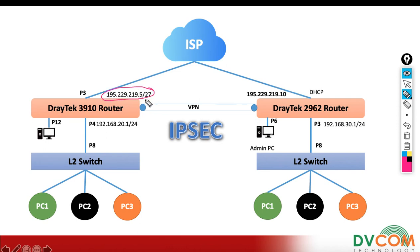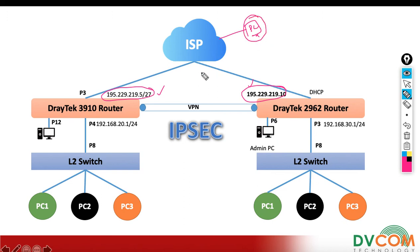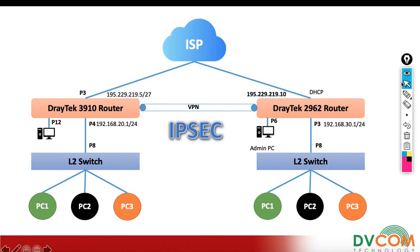Since I have public IPs in both locations — on the 3910 we configured 195.229.219.5, and on the 2962 we configured 195.229.219.10 — from the internet I can access both. So if my PC is directly connected to the internet and I enable HTTP or HTTPS access, I can access these two devices from anywhere.